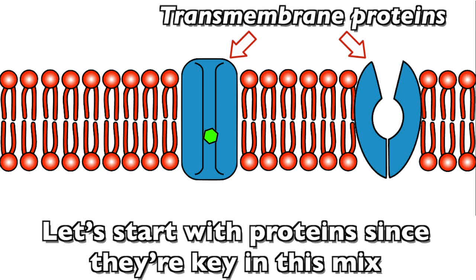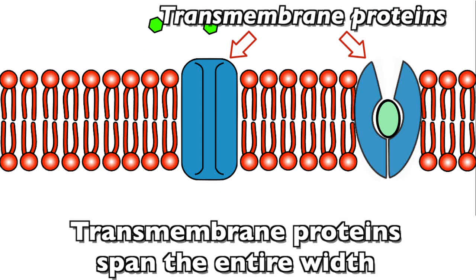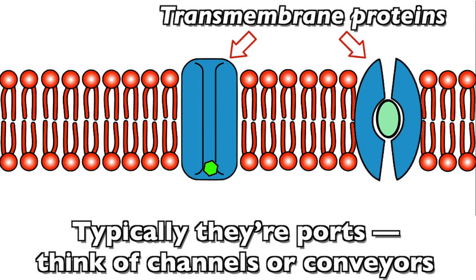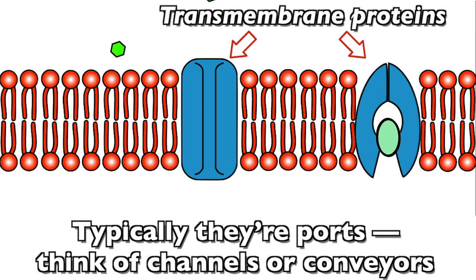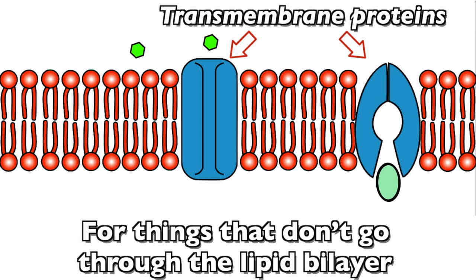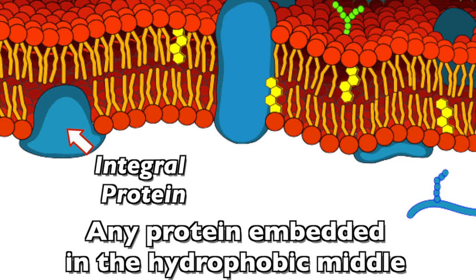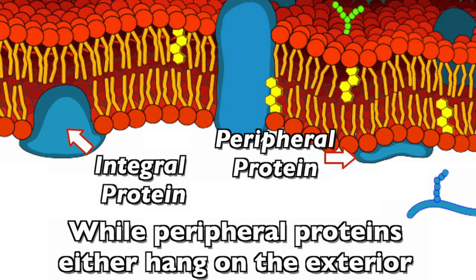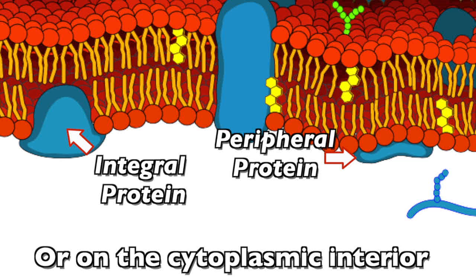Let's start with the proteins since they're key in this mix. Transmembrane proteins span the entire width — typically the ports, think of channels or conveyors, the things that don't go through the lipid bilayer. Any protein embedded in the hydrophobic middle, built right into the inside, is considered integral. While peripheral proteins either hang on the exterior or on the cytoplasmic interior.